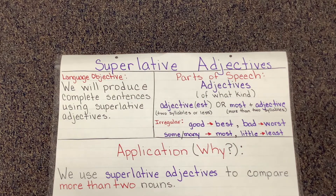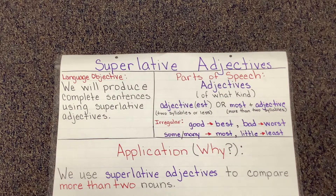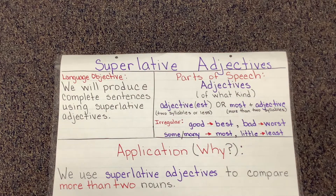Some irregular superlative adjectives are: good to best, bad to worst, some or many to most, and little to least. Think in your head — why would we use superlative adjectives? That's right, we use superlative adjectives to compare more than two nouns.